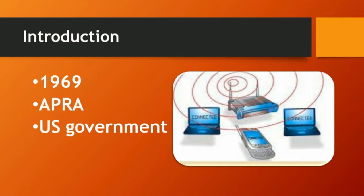Internet is a means by which millions of computers across the world are connected through cables, telephone lines and satellites. We know that internet can also be connected wirelessly. When computers are connected over the internet, we can send and receive messages — not only messages, but also graphics, animation, audio and video.